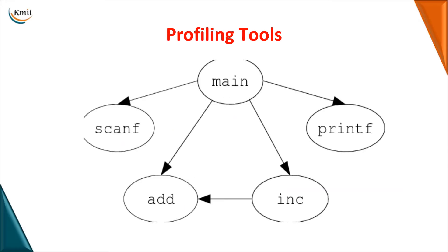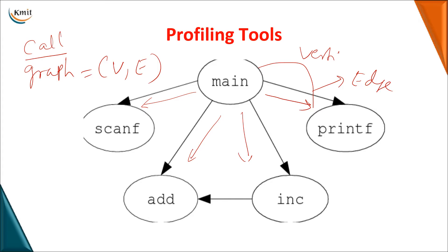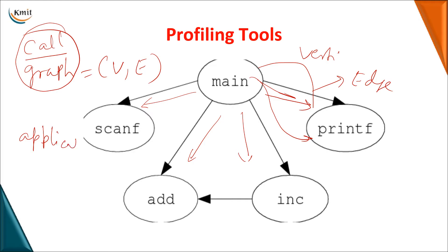A call graph is a graph — a collection of vertices and edges. As the name implies, you draw a graph depending on which function is calling which other function. For example, if main is calling printf, you establish a link between these two — they become your vertices and this becomes your edge. So you are establishing a relation or link between two functions, which is why this tool is called a call graph. For any given application, you can generate a call graph based on the calling procedures.